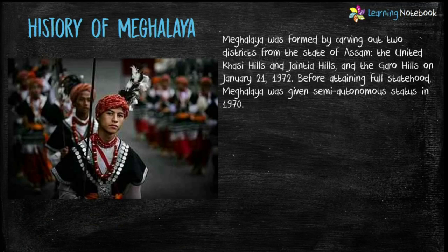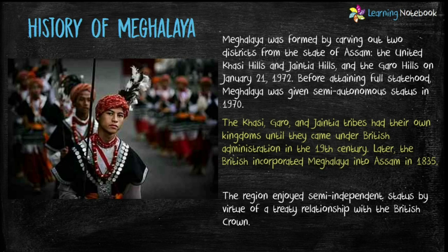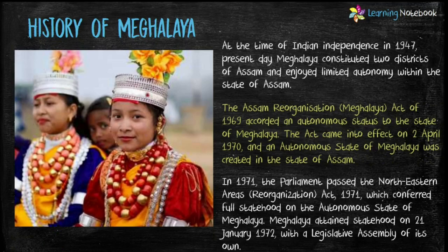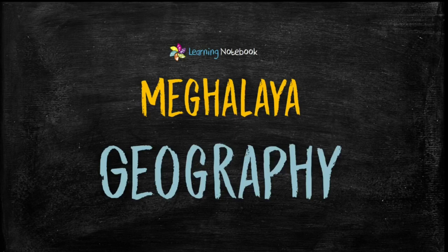Before attaining full statehood, Meghalaya was given semi-autonomous status in 1970. The Khasi, Garo and Jaintia tribes had their own kingdoms until they came under British administration in the 19th century. Later, the British incorporated Meghalaya into Assam in 1835. At the time of Indian independence in 1947, Meghalaya constituted two districts of Assam and enjoyed limited autonomy within the state of Assam.